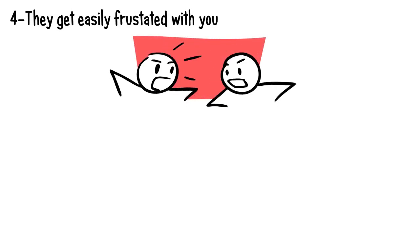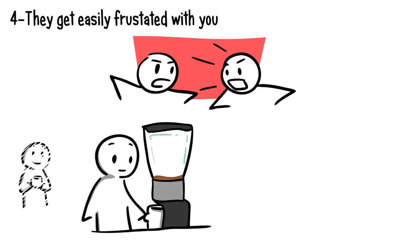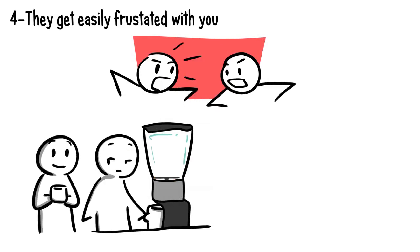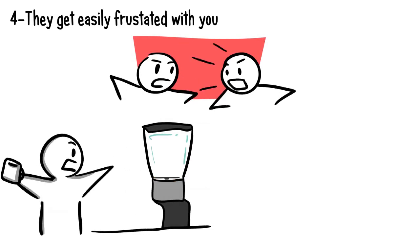Number four: they get easily frustrated with you. Do the two of you argue or disagree over matters on a daily basis? When someone dislikes you, they'll do anything except make things easy for you. They might have been in a good mood, but once they interact with you, they turn sour, bitter, and angry.